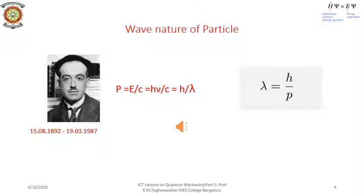De Broglie argued that the equation p equals h by lambda is general and applies to particles as well. So we may rewrite the equation as lambda equals h by p, where lambda is the wavelength of the wave associated with the moving particle which possesses a momentum p. Two points are immediately noted: since lambda is related to momentum p, only moving particles will exhibit wave-like properties — stationary particles may not exhibit the wave aspect at all. Furthermore, owing to the smallness of Planck's constant, the wavelength lambda will be extremely small.